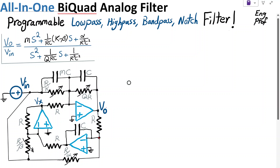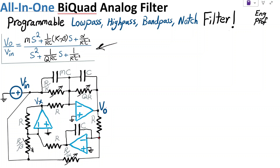An all-in-one bi-quad active analog filter implemented using three ideal op-amps. We call it all-in-one because with its transfer function, it can implement at the same time—depending on the parameters—low pass, high pass, band pass, notch, and even all-pass filter.